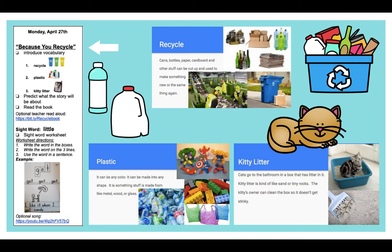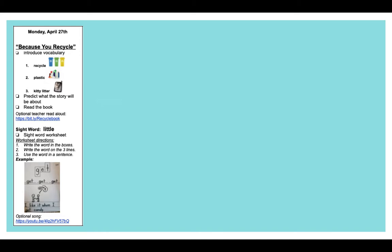Our last word is kitty litter. Cats go to the bathroom in a box that has litter in it. Kitty litter is kind of like sand or tiny rocks. The kitty's owner can clean the box so it doesn't get stinky. Kitty litter is our third vocabulary word.